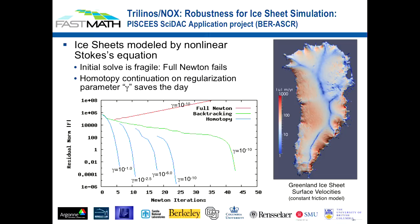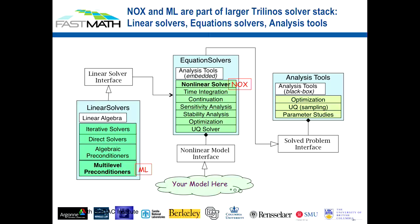The failure to converge with regular Newton is shown by the red line, which extends upward. Using backtracking methods eventually converged, as shown by the green line, but really the blue lines — the homotopy approaches — were much more effective. This emphasizes a theme you'll see repeated throughout many of the algebraic solver presentations: it's really important to have a broad range of algorithmic capabilities so that individual applications can experiment and determine what's most effective for their particular problems.